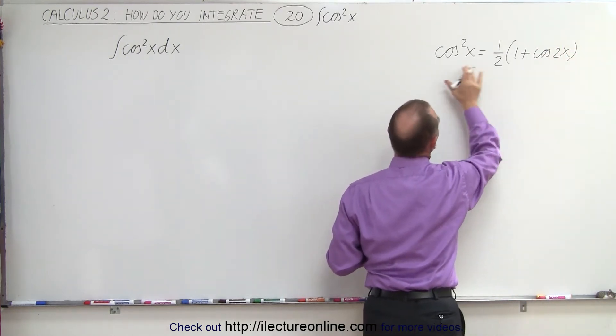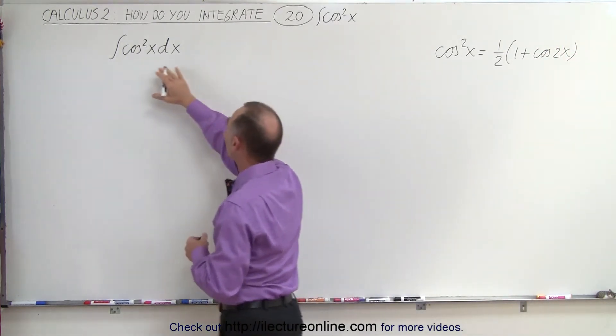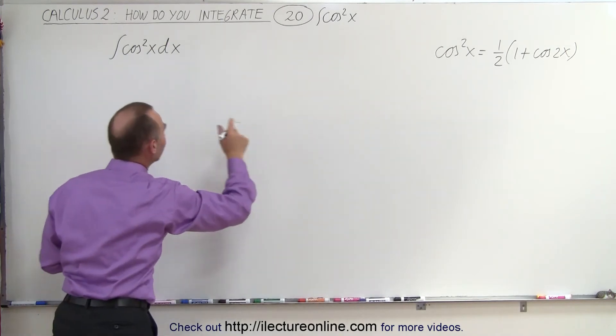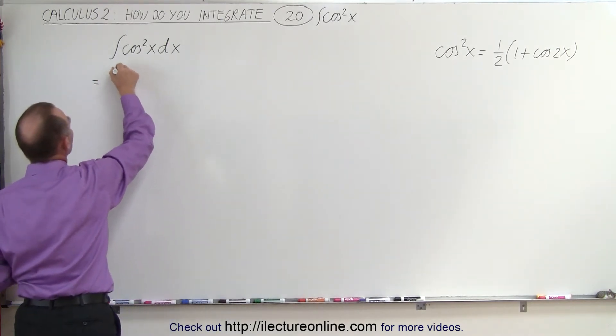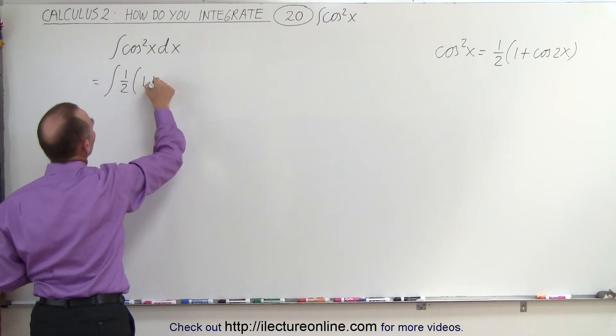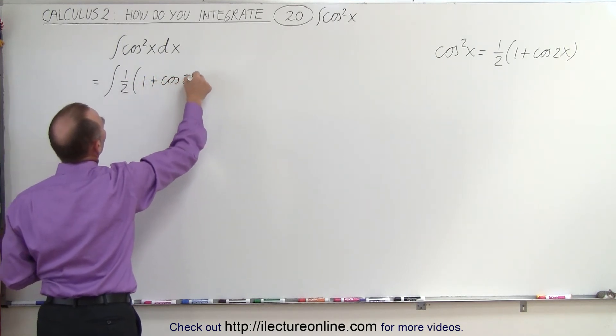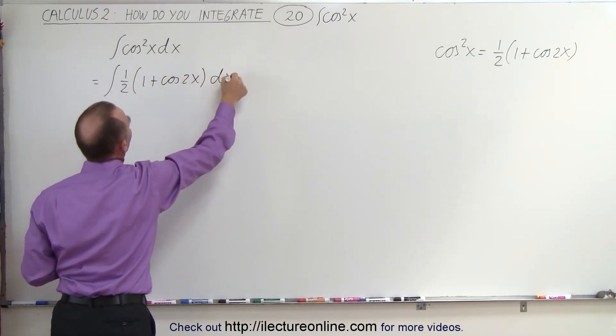So if this is equal to that, let's go ahead and replace the cosine squared of x by its identity. So this is now equal to the integral of one-half times one plus the cosine of two x times dx.